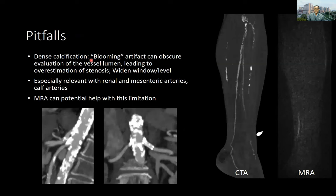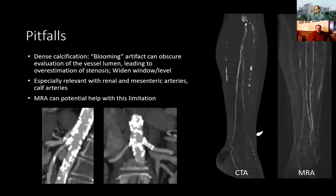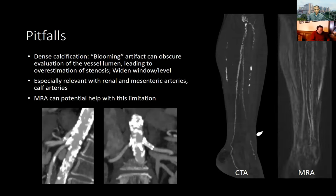Dense calcification — what we call blooming — can obscure evaluation of the vessel lumen and lead to overestimating the degree of stenosis. This can be addressed to some degree by widening our window width and adjusting our level to cut through the calcification. On rare occasions, we perform MR angiography, particularly in the calves, to potentially overcome this limitation, since on MR we don't see calcium very well. Time-resolved MR angiography can provide a better sense of patency and degree of stenosis without the effects of calcification.